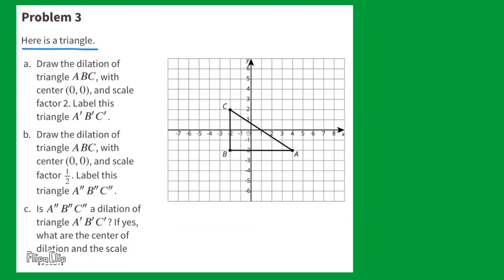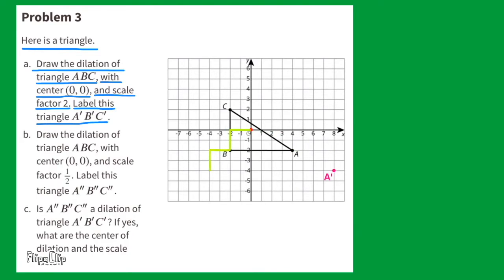Problem number 3. Here is a triangle. Part A: Draw the dilation of triangle ABC with center coordinates (0, 0) and scale factor 2. Label this triangle A'B'C'. Identify (0, 0) as the center. Point A is 4 to the right and 2 down from center. Since scale factor is 2, go another 4 right and 2 down from A to find A'. For B, which is 2 left and 2 down: go another 2 left and 2 down to find B'. For C, which is 2 left and 2 up: go another 2 left and 2 up to find C'. Connect the dots to see triangle A'B'C'.